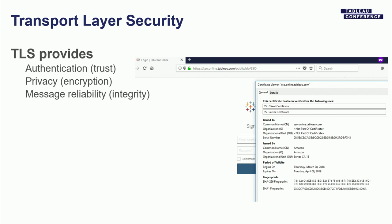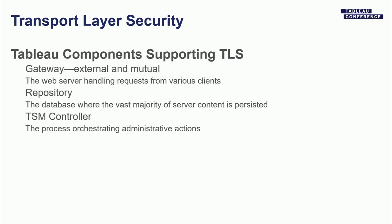To recap: TLS allows for authentication or trust using certificates. It also allows for privacy through encryption. There's also a third guarantee — message integrity — meaning you can be reasonably assured that nobody has tampered with your messages before they made it over the wire. This is our recap of TLS, and it's really important for the following parts because I'm going to be talking about certificates that exist within Tableau Server.